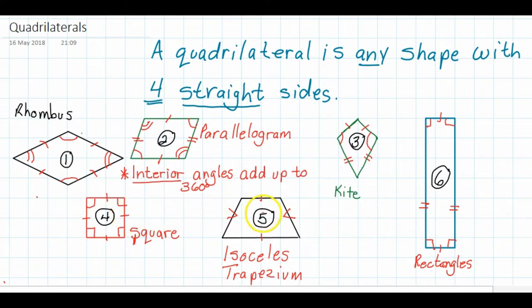Number five is an isosceles trapezium. There are different types of trapezium. This is an isosceles trapezium and that means that these two sides here are parallel. In this case, the top and bottom lines and the two sides on the side are equal in length.